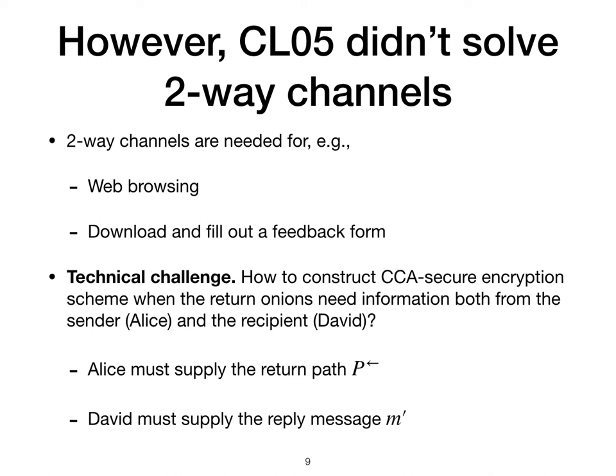The challenge with constructing a CCA secure repliable onion encryption scheme is that it is unclear how to do so when the return onions cannot be constructed by any one party. The return path must be supplied by the sender, Alice, whereas a reply message must be supplied by the recipient, David.